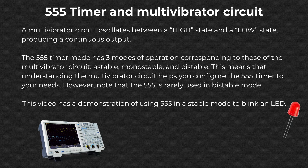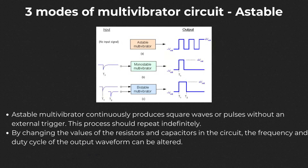Just note that it is rarely used in bistable mode, as there are other better ICs for flip-flops and latches. An astable multivibrator, also called a free-running multivibrator, is a circuit that continuously produces square waves or pulses without the use of an external trigger. This process repeats indefinitely. The term astable refers to the absence of a stable state. By changing the values of the resistors and capacitors, the frequency and duty cycle of the output waveform can be altered.